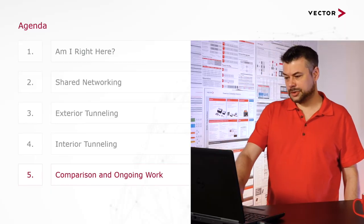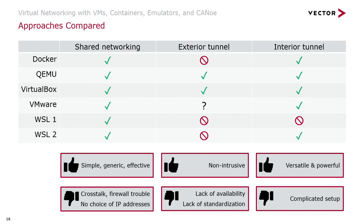I'll wrap up with a comparison of the shown approaches. Shared networking works with any of the investigated virtualization tools, is very simple to set up, but lacks isolation and cannot be used to simulate arbitrary network topologies. Exterior tunneling is supported by VirtualBox and QEMU, but cannot work with Docker and WSL since all of them are more or less hard-wired to the host network adapter. Unfortunately I could not find anything similar for VMware. The biggest advantage of exterior tunneling is that it requires zero modification to the client's environment — especially important if you are testing finalized images received from a third party. A disadvantage is that this approach heavily relies on a non-standardized feature which is not supported by every virtualizer.